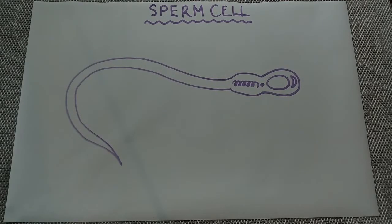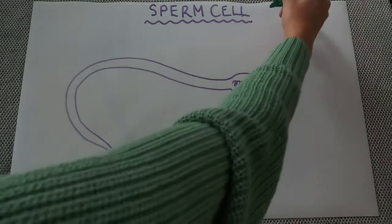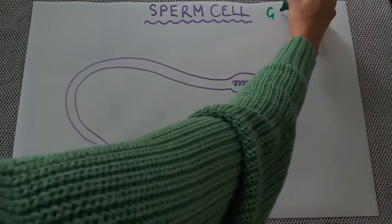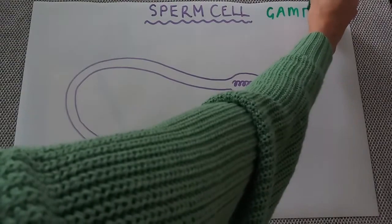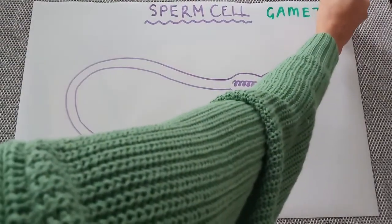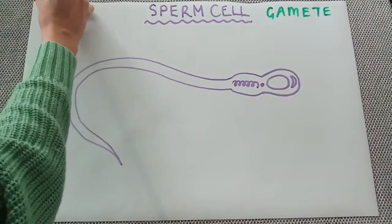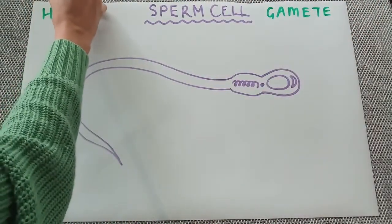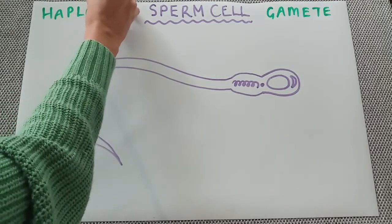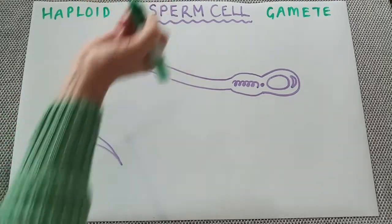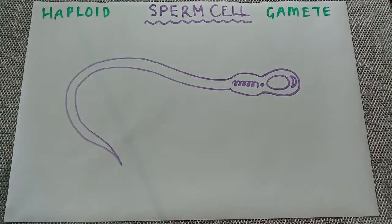In this video we're going to have a look at the sperm cell. This is another one of the human gametes, so a human sex cell. It is also a haploid cell, meaning it has half the number of chromosomes — for humans this is 23 single chromosomes.